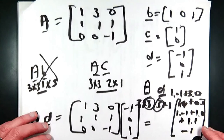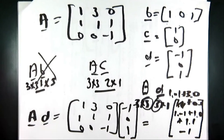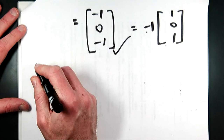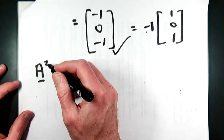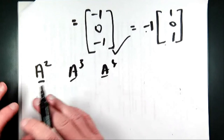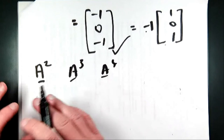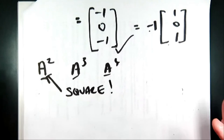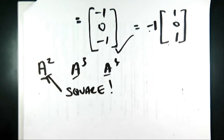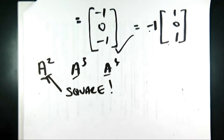Before I stop, just some notation you'll see frequently. There's the notation of a matrix with a square — A squared. All that means is you multiply the matrix A by itself. Usually when you're talking about squares, cubes, and to the power of 4, you're talking about a square matrix and it always makes sense. If you're using this notation — squared, cubed, to the power of 4 — A must be square.